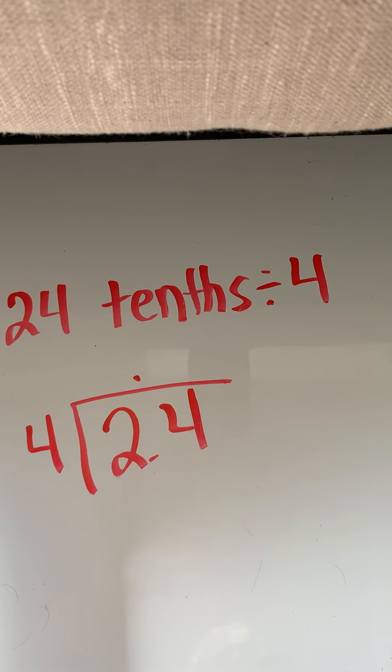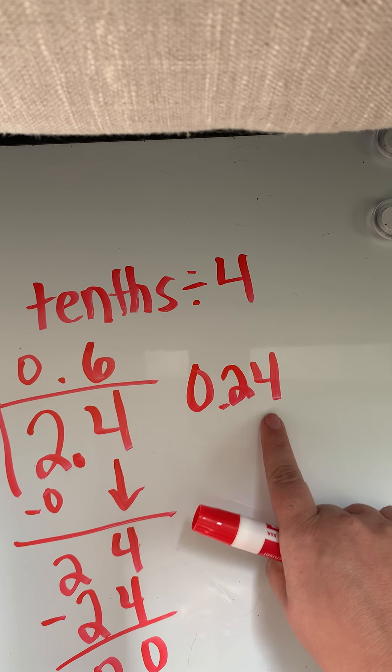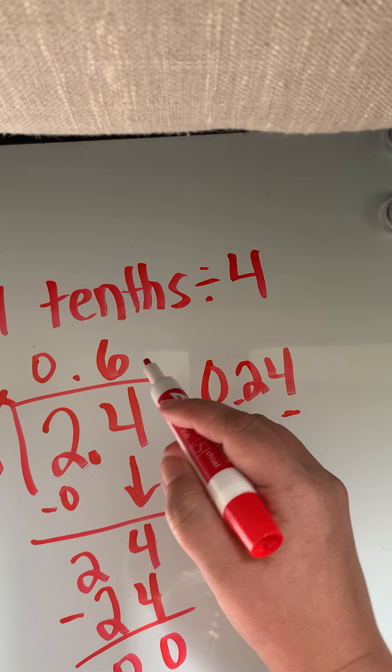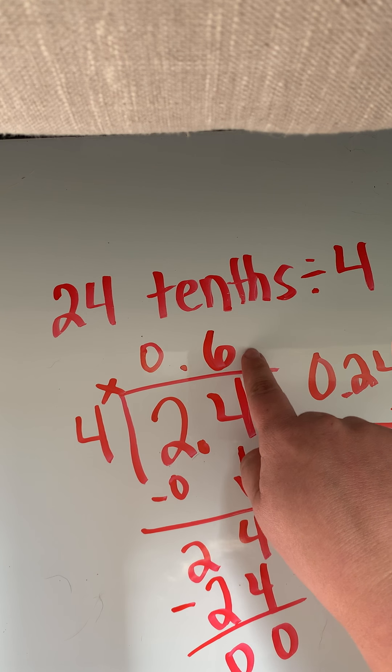Four times zero gets me close to two. Four times what gets me to 24? Six — and that is 24, so we get to zero. Now if I wrote 24 tenths as 0.24, that's actually 24 hundredths because it ends in the hundredths place. You need your decimal to end in the tenths place, which is why we write it as 2.4. So the answer is 0.6, or six tenths.